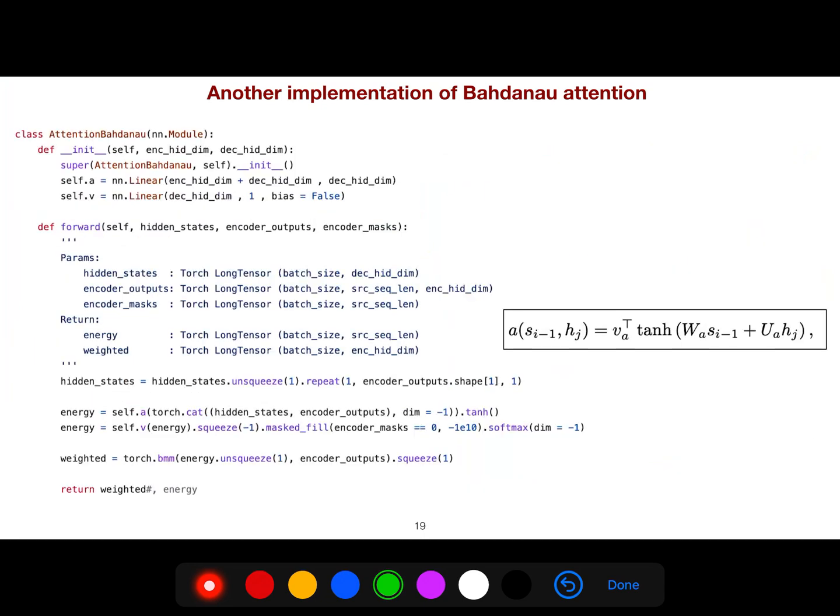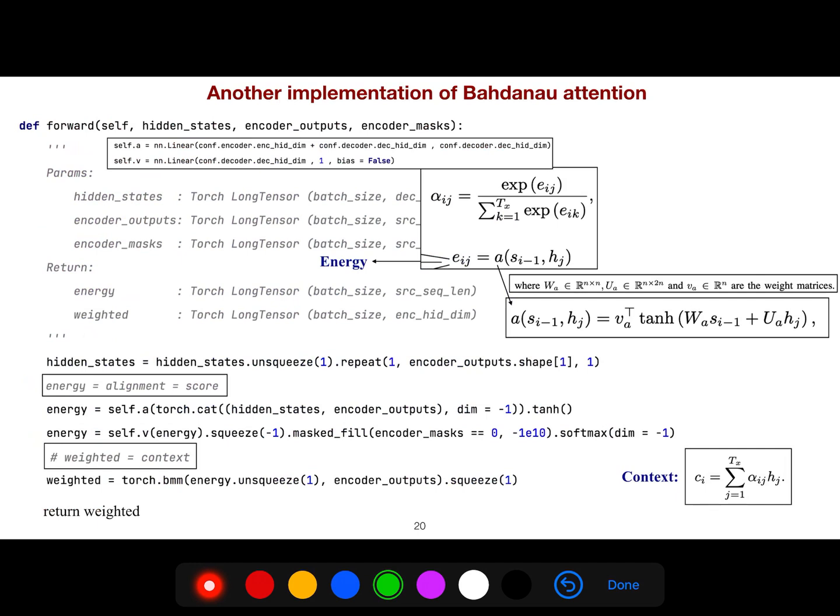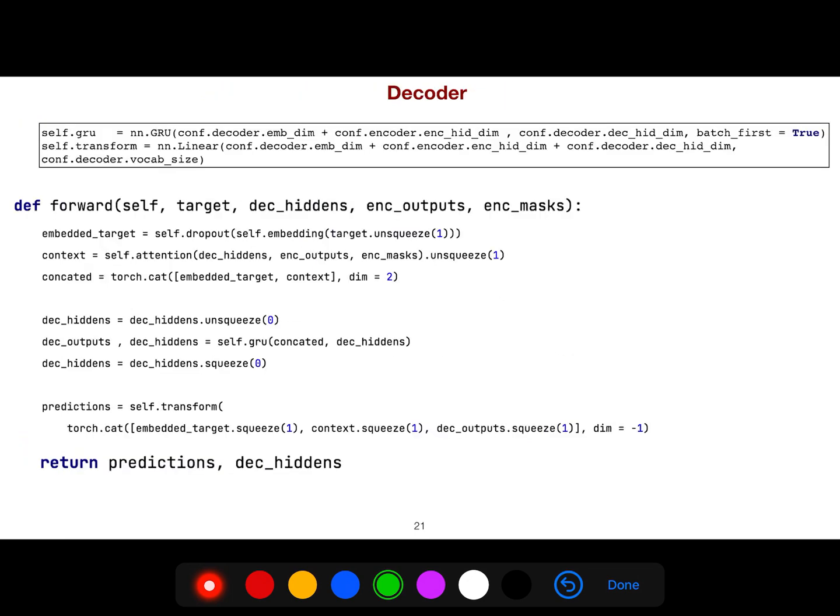And this is an implementation of attention model. So in the forward, you have energy. That's alignment model. Some people call score. Some people call energy. Some people call alignment model. But after that, you have a weighted combination of them that is context.